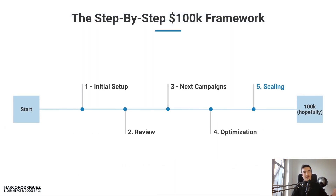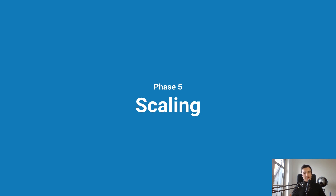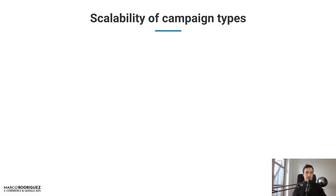Now the last step of this 100K framework: scaling. Everyone who makes some sales wants to get there. Google scaling is more difficult than Facebook scaling — on Google it tends to be more robust and long-term. I have clients I've worked with for two and a half years or longer with campaigns running very well for over a year. Certain evergreen campaigns can literally run for so long — that's unheard of on Facebook. That's the big advantage, even though it's harder to get there.